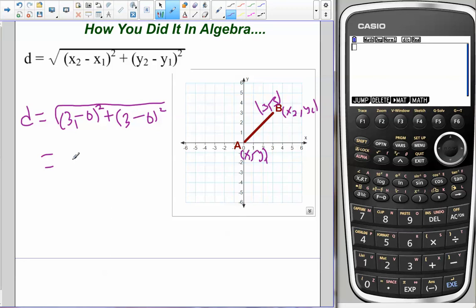So I got 3 minus 0 which is 3 squared, which is going to be 9 plus 9, which equals radical 18, which when we break it down, if you remember your algebra, that's 9 times 2, so 3 radical 2.